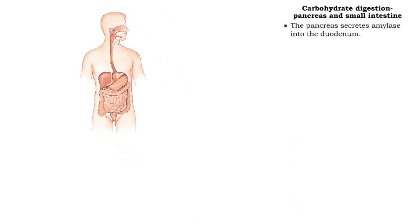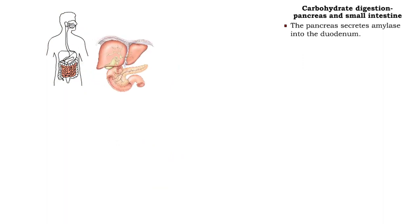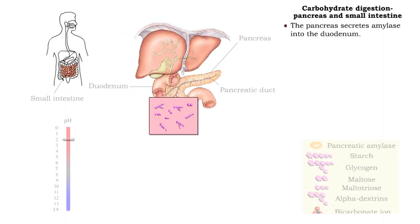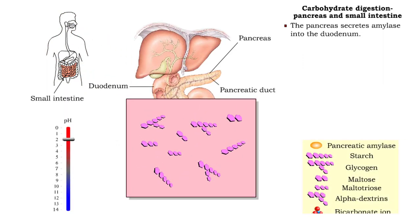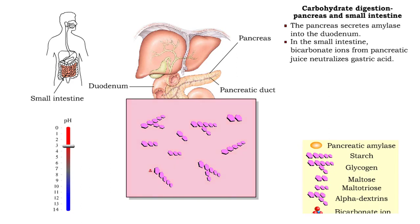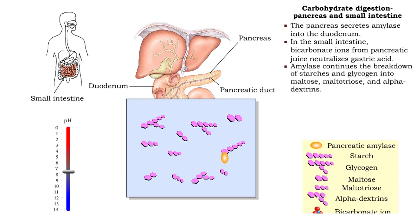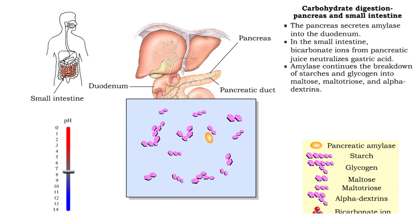The pancreas also secretes amylase into the duodenum. In the small intestine, bicarbonate ions from pancreatic juice neutralize gastric acid. This allows the amylase to continue the breakdown of starches and glycogen into maltose, maltotriose, and alpha-dextrins.